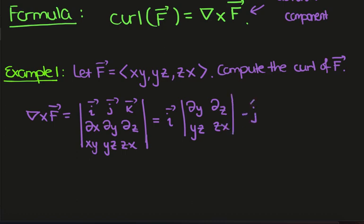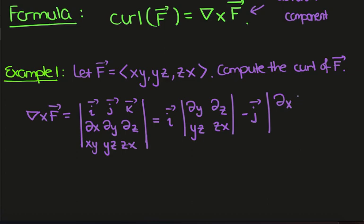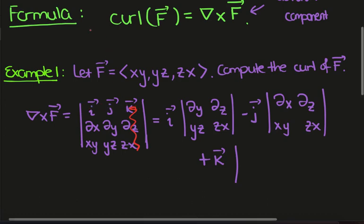Then we'll minus j-hat times the determinant of this matrix. We'll have partial-x and partial-z for xy and zx. And finally the k-hat component — hiding that column and row, we'll have partial-x and partial-y for xy and yz.